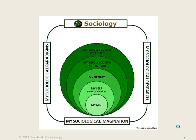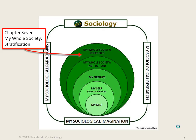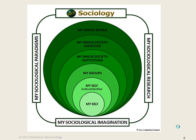We continue with the macro approach in chapter 7 with our discussion of stratification. The focus will be on stratification by class, sex, and race. In this way, we deal with the issues of class, sex, and race at the macro level, whereas they were dealt with at the micro level back in chapter 3.